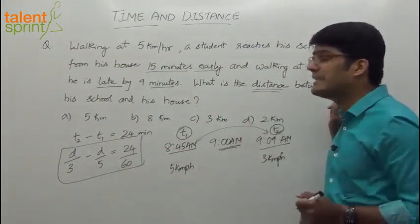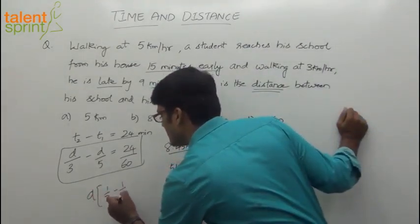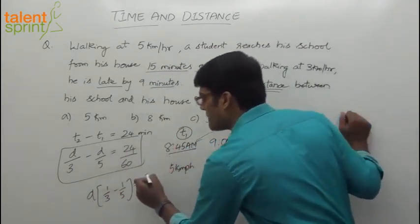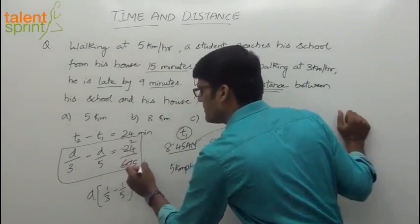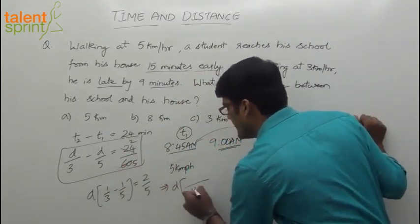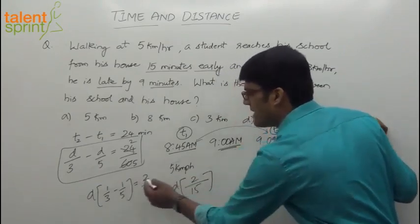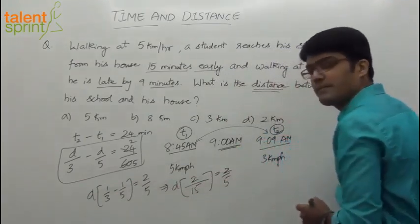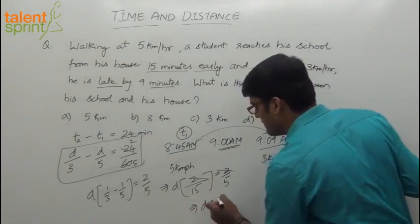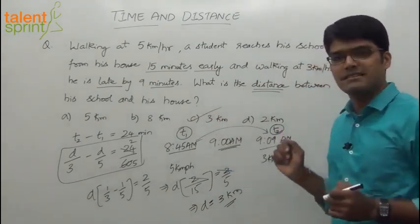The question asks for the distance between his house and his school. Since D is common, we get: 1/3 minus 1/5 equals 24/60, which simplifies to 2/5 on the right side (24/60 = 2/5). Taking the LCM of 15 on the left: 5 minus 3 over 15 equals 2/5. So 2/15 = 2/5, and after cancellation D equals 15/5, which is 3 kilometers. Option C is the answer — 3 kilometers.